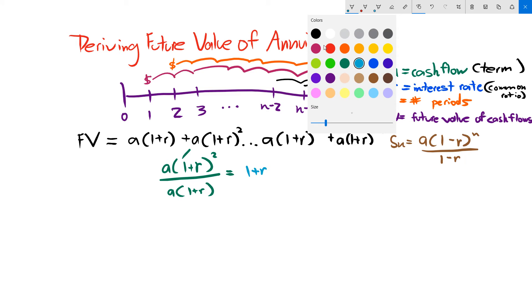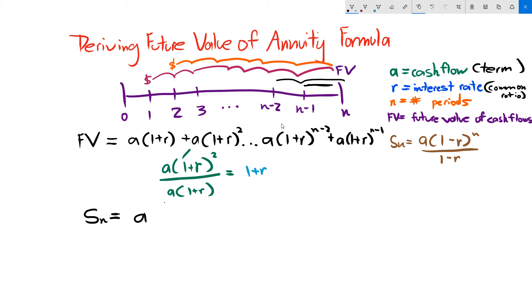So if we were to plug this in to our geometric series formula, what do we have here? Well, we have a, we have 1 minus and now we're going to substitute in our common ratio which is 1 plus r, so that's to the n, and then divided by 1 minus the common ratio which is 1 plus r.